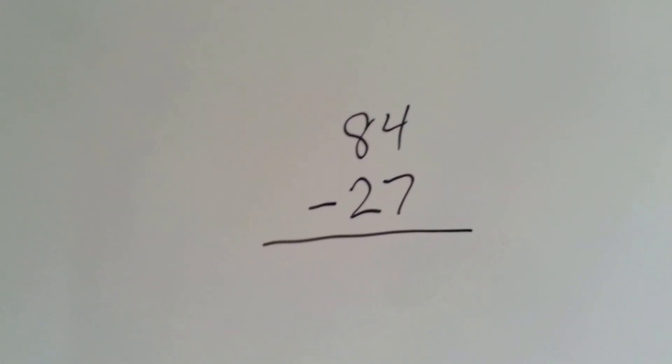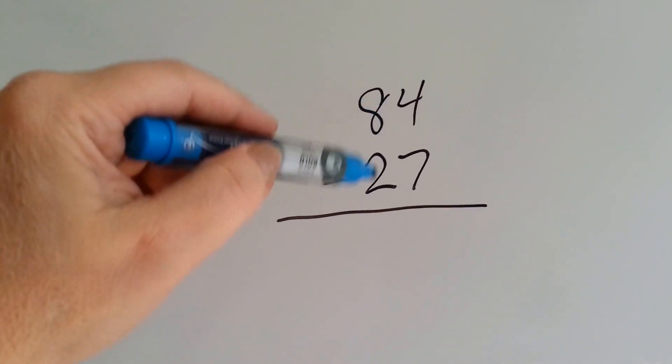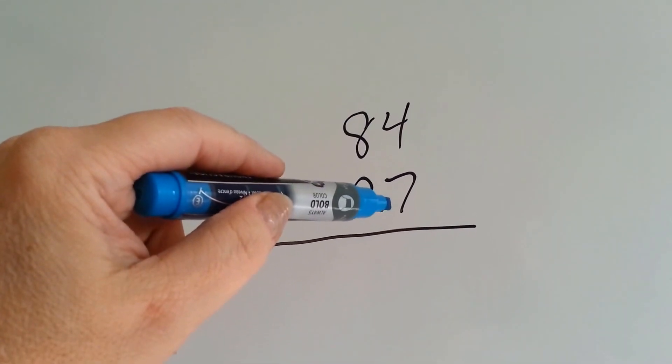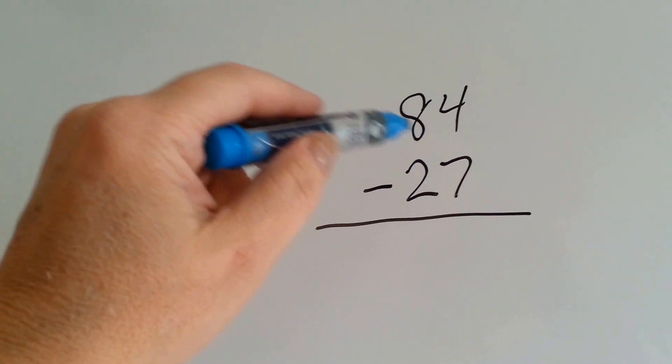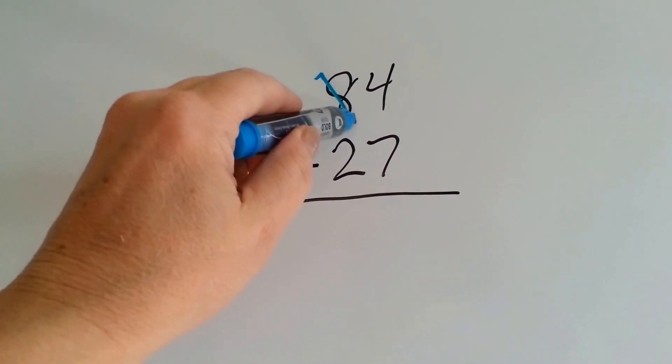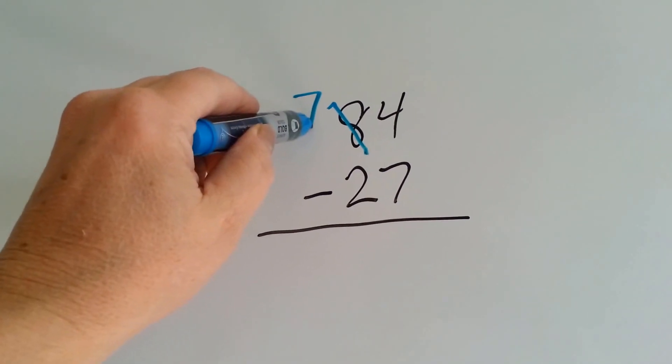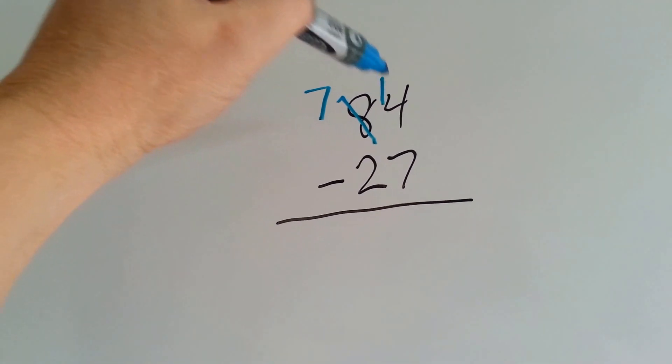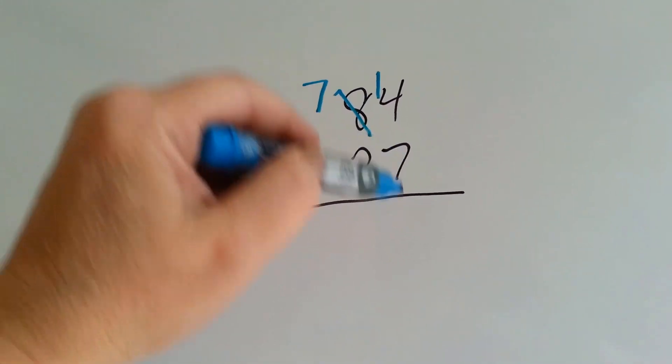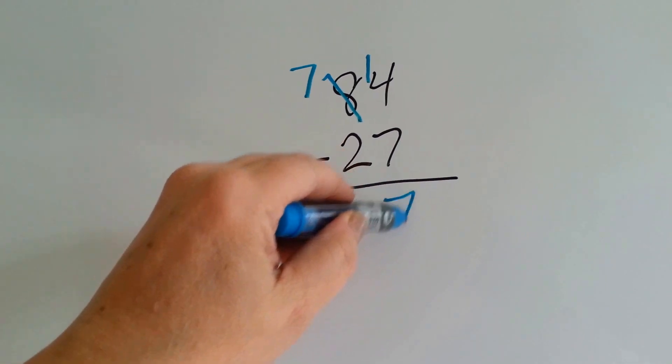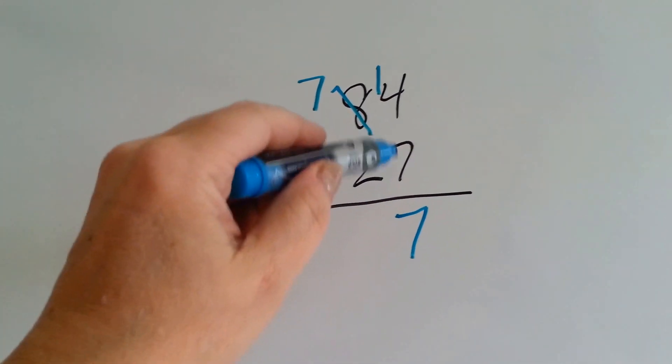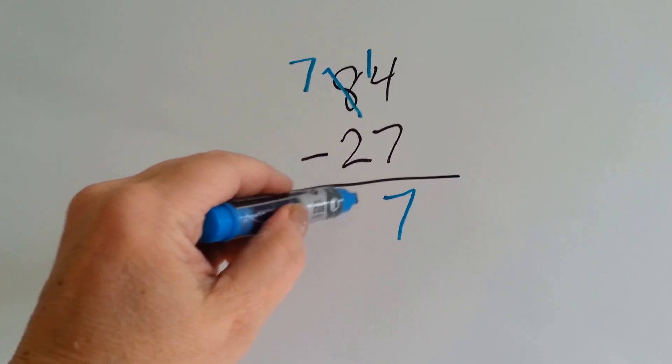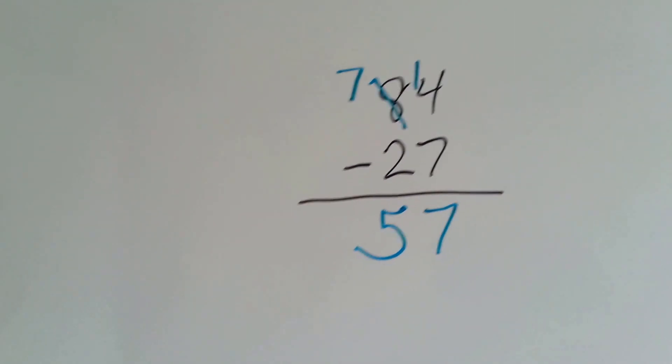How about a subtraction? Can you have 84 and take away 27? Yes, you can. But can you have 4 and take away 7? No. So we're going to need to borrow from the tens side. The 8 is going to become a 7. It's going to give that 1 over here to the 1 side. 14 take away 7. Do you know what it is? It's 7 because 7 plus 7 is 14. 7 take away 2 is 5. And our answer is 57.